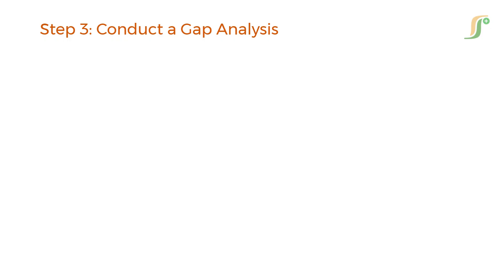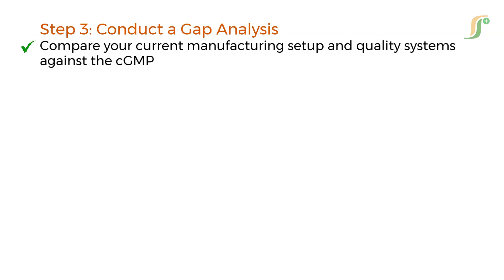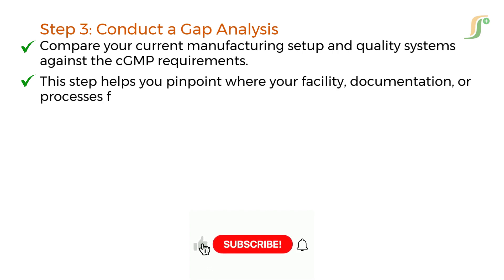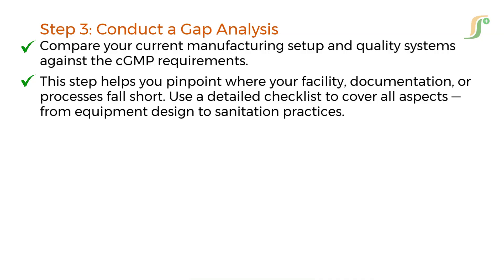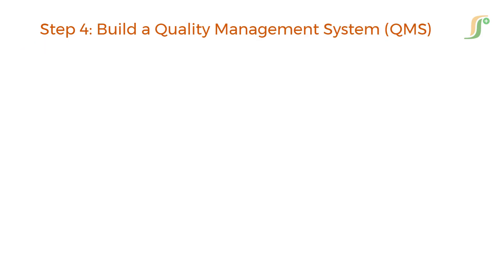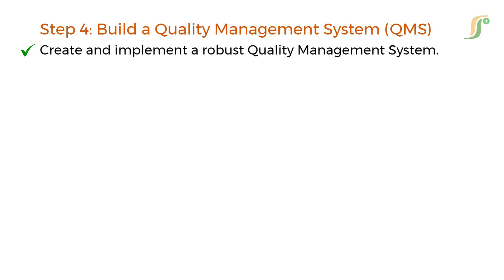Step 3: conduct a gap analysis. Compare your current manufacturing setup and quality systems against the CGMP requirements. This step helps you pinpoint where your facility, documentation, or processes fall short. Use a detailed checklist to cover all aspects, from equipment design to sanitation practices.